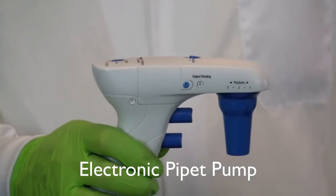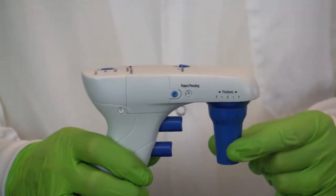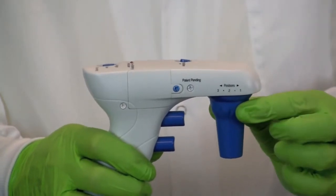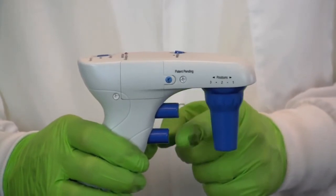The parts of an electronic pipette pump include the gasket that connects to the pipette, a filter that prevents any contaminants from getting into the pump, a suction button, and an exhaust button.